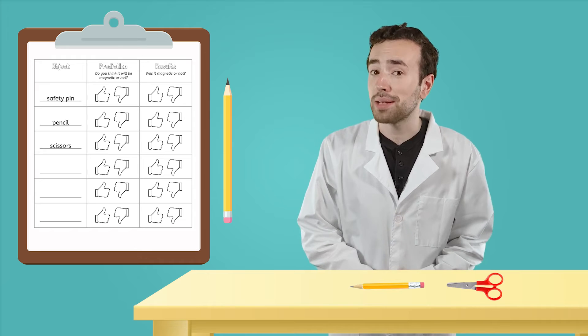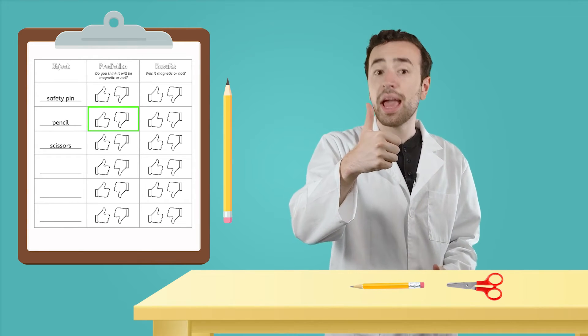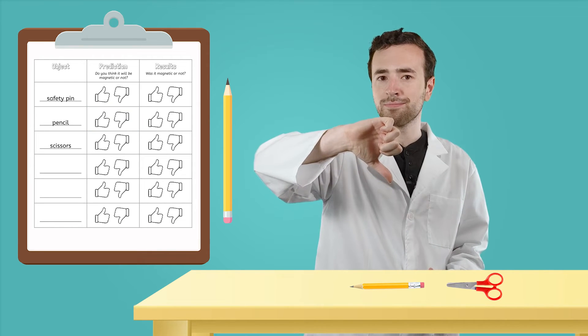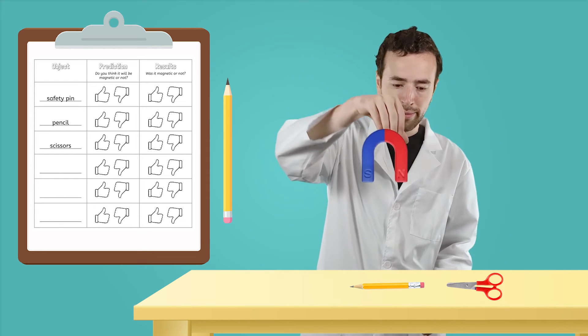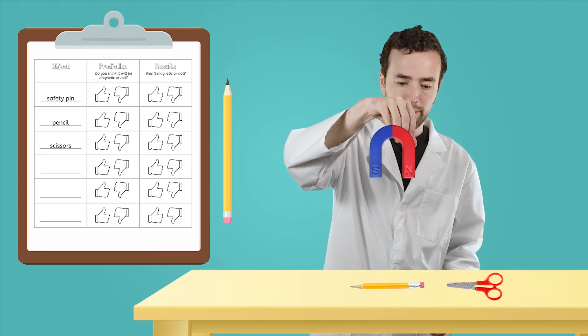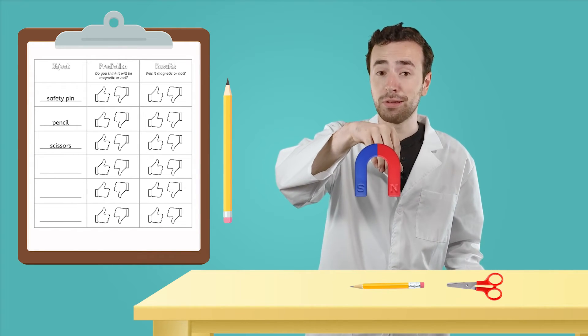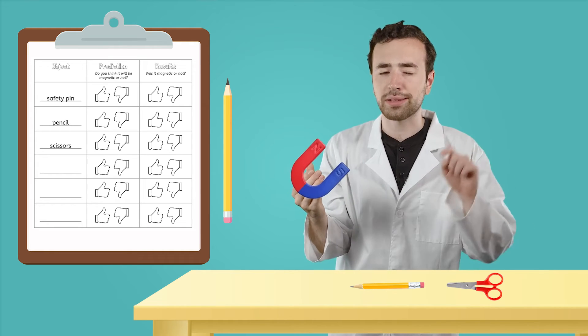Let's make a prediction about our next object, a pencil. Thumbs up if you think the pencil is magnetic and thumbs down if you think it is not magnetic. Here we go. Looks like this pencil is not magnetic. The magnet's magnetism did not attract this pencil.